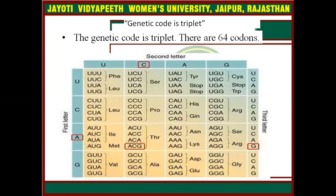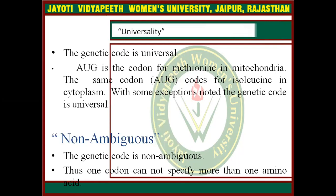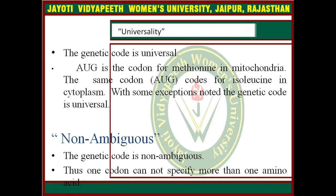The genetic code is basically triplet and there are 64 codons. Regarding universality, the genetic code is universal. AUG is the codon for methionine; however, in mitochondria the same codon AUG codes for isoleucine — with some exceptions, the genetic code is universal. Non-ambiguous: the genetic code is non-ambiguous, thus one codon cannot specify more than one amino acid. Non-overlapping: one base cannot participate in formation of more than one codon.